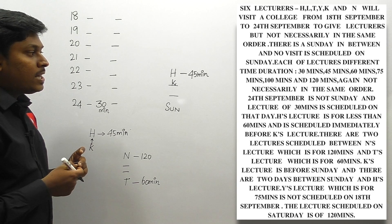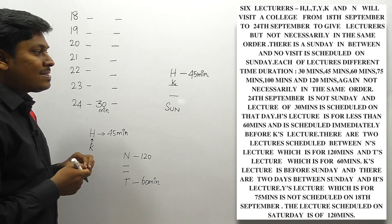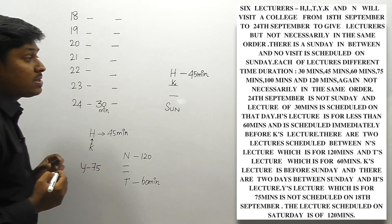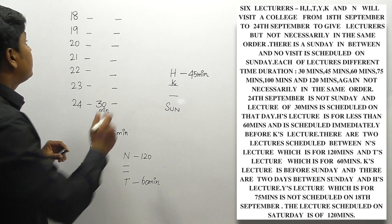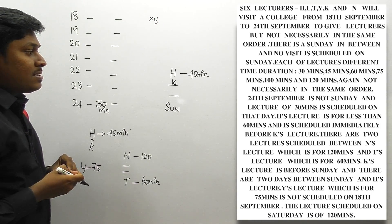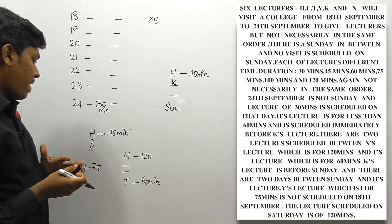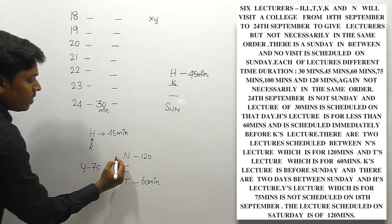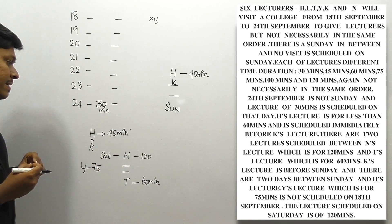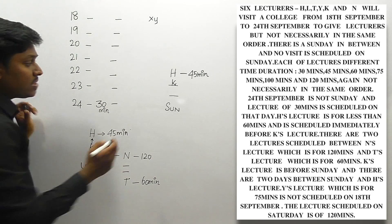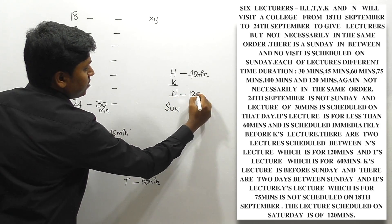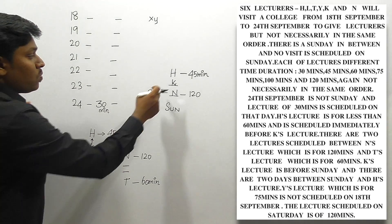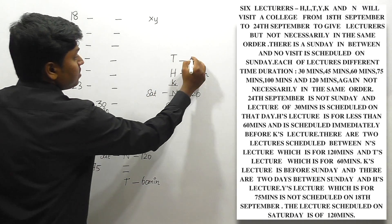Y's lecture is 75 minutes and is not scheduled on 18th September. The lecture scheduled on Saturday is 120 minutes — we already know N is 120 minutes, so N is on Saturday. The next day after Saturday is definitely Sunday. Between N and T there must be a gap of two lectures, so positions 1 and 2 after T give us T at 60 minutes.